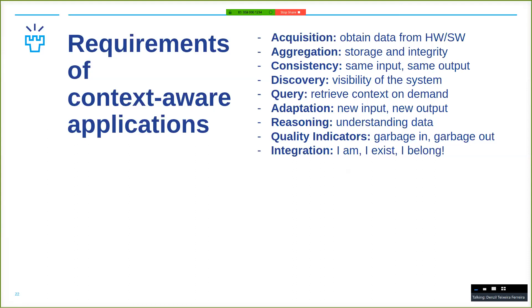Integration — when you build a context-aware system, you might have to integrate with other things that exist in the user's surroundings. For example, think about Google Assistant — all the manufacturers are trying to integrate with it so you can say 'turn on the light,' 'turn on the fan,' 'start making my coffee.' These devices need to fit into an existing ecosystem.